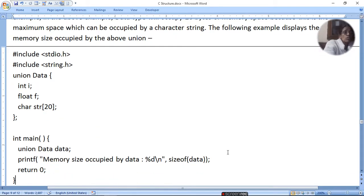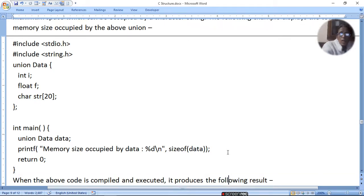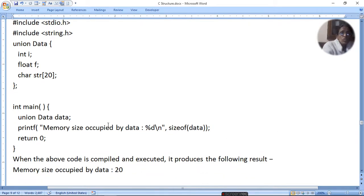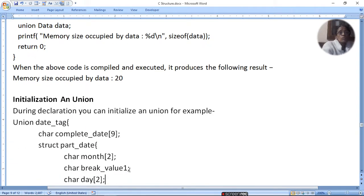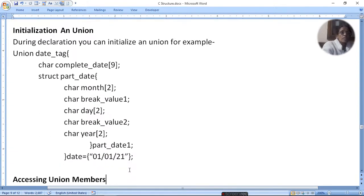Include stdio.h, string.h. Union data: int i, float f, character str[20]. When we print the memory size occupied by data, what will it do? Data is our union name, and this is our instance. When we print this, it will show memory size occupied by data is 20. That means the union defined is of 20 character size.